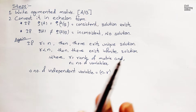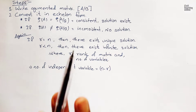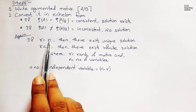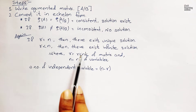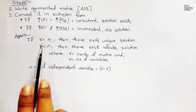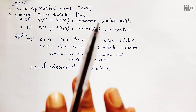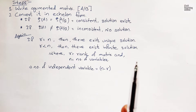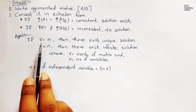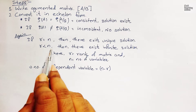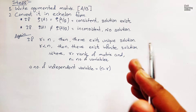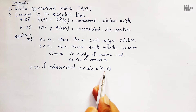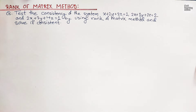After knowing whether the given system of equation is consistent or not, we apply a second condition: if R equals N, where R is the rank of the matrix and N is the number of variables, then there exists a unique solution for x, y, z. If R is less than N, there will be infinite solutions, and the number of independent variables equals N minus R. Now let us proceed to the solution of this problem.